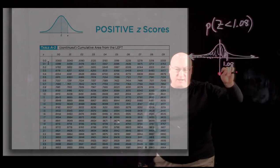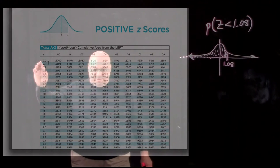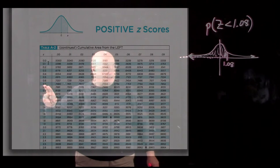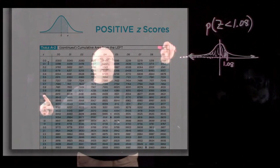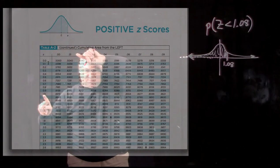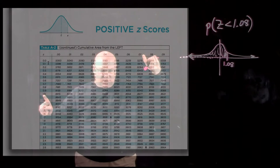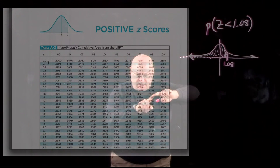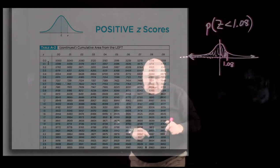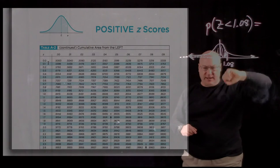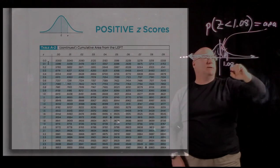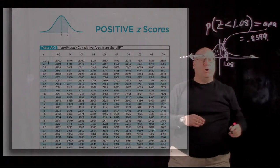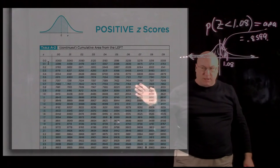Find the probability that Z is less than 1.08. If I think of my bell-shaped curve, I'm looking along the horizontal axis for a z-score of 1.08 and asking what area lies to the left. I look it up in the table: go down to 1.0 in the z column to get the integer and tenths position, then slide over to 0.08 for the hundredths position. I get 0.8599. So almost 86% of the probability for the Z random variable lies to the left of 1.08.